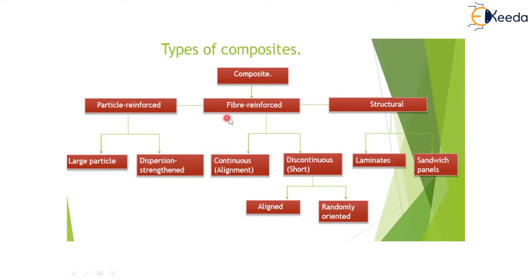The second category is fiber reinforced composite material, where the shape of the reinforcement is in the form of a fiber, like a thread. If you add a thread-like second material into the composite, the strength will increase. Compared to particulate reinforced composites, it has a lot of strength and is vastly used in all industries, especially in the structural world.